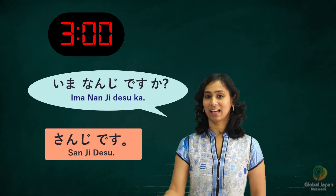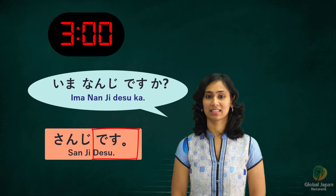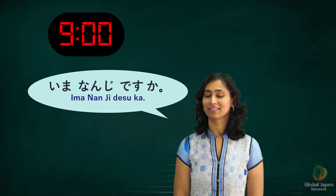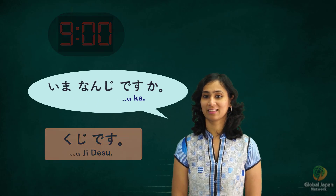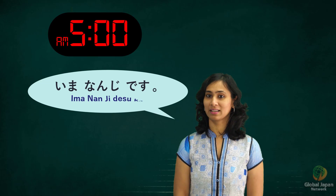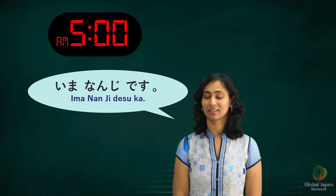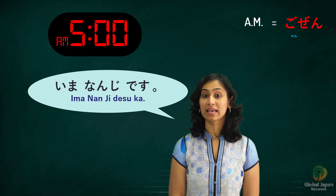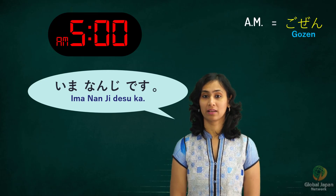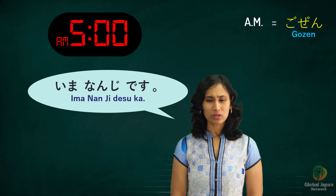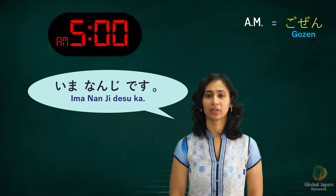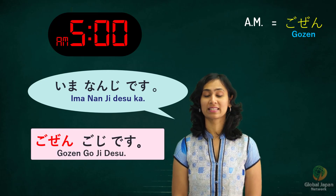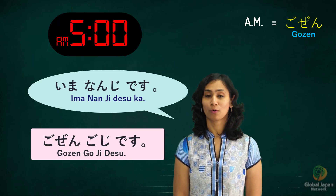Ima naanji desu ka? — Sanji desu. Ima naanji desu ka? — Rokuji desu. Ima naanji desu ka? — 5 AM. The word for AM is Gozen, and Gozen is added at the beginning. So this would read: Gozen Goji desu.